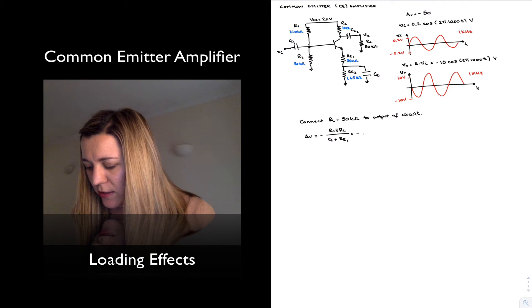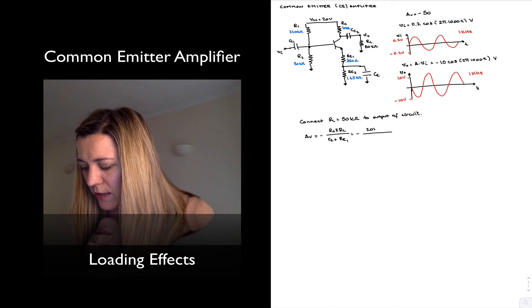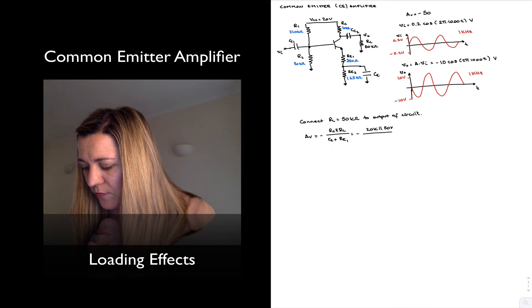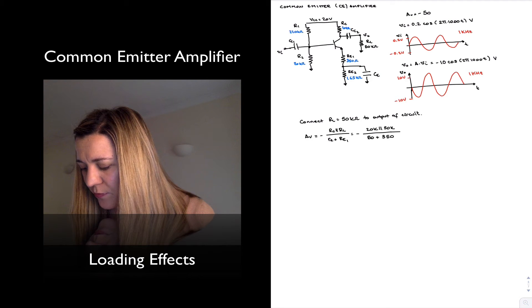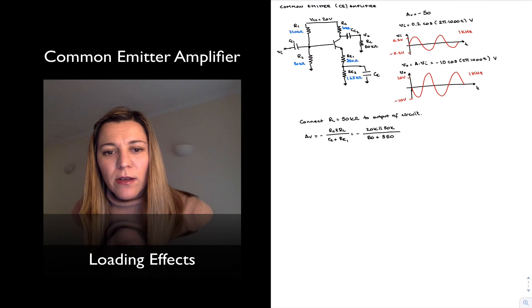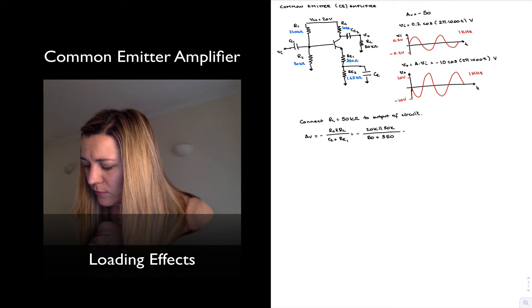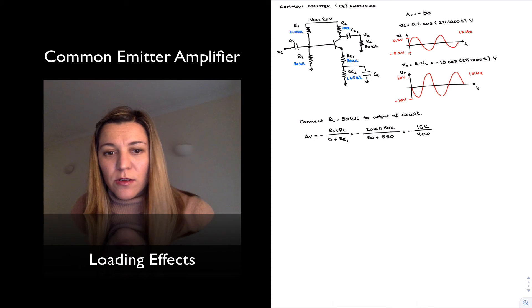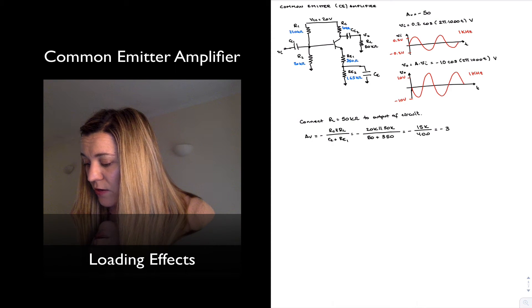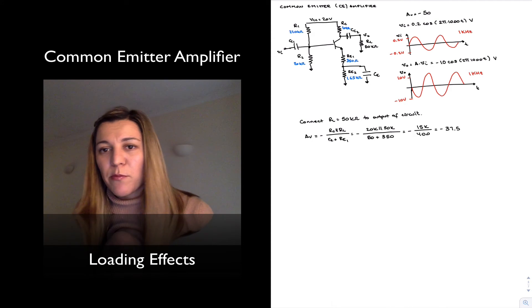And so that's going to be negative 20K in parallel with 50K divided by 50 plus 350. Negative 15K divided by 400, which is going to give me a gain of minus 37.5.